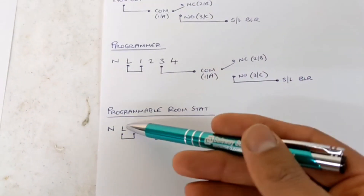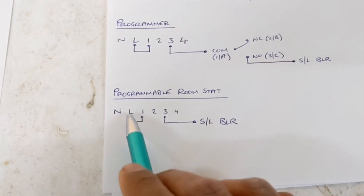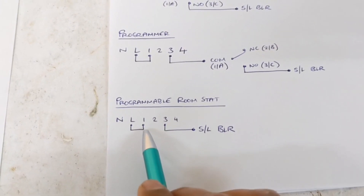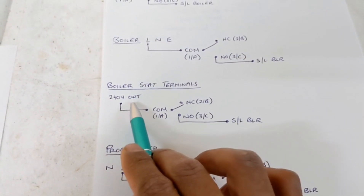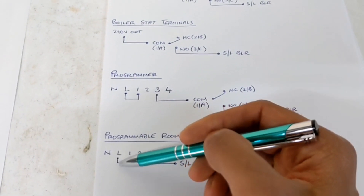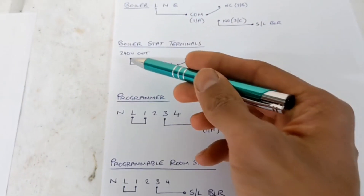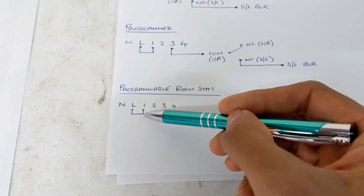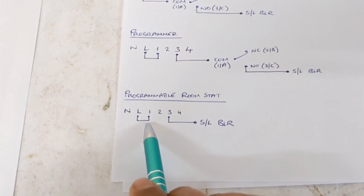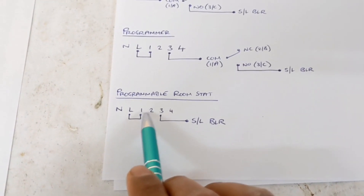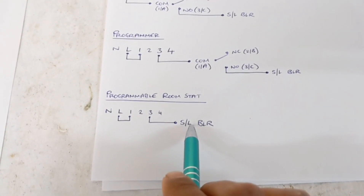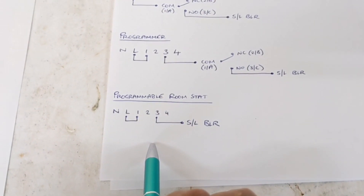Next up we've got a programmable room stat, which is basically combining the programmer and the room stat together. Again, it's going to have its own live and neutral terminals. You can either put a link between live and terminal one to liven up the common, or if you've got a combi boiler with a dedicated 240 volt out terminal you can take a four or five core cable — bring your live and neutral — and instead of a link between L and one, that 240 volt goes directly to terminal one to liven up the common. When you turn the temperature up and the programmer is set to on, it will go from terminal two at rest to terminal three — normally open — which tells the boiler to fire up.